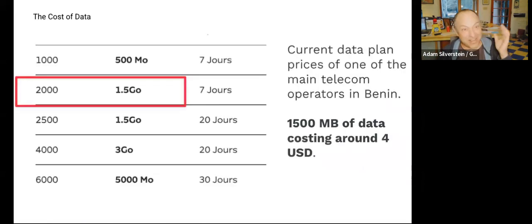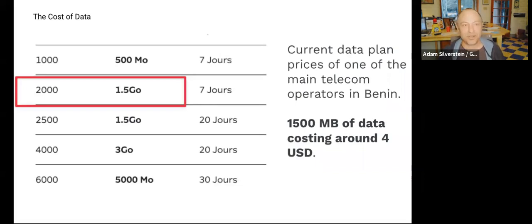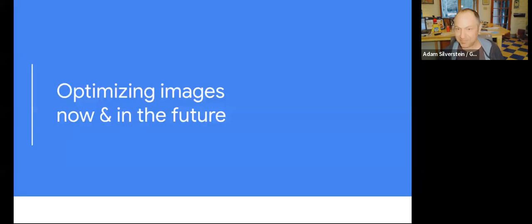Another thing to think about with images: they cost users to download. We're used to having unlimited bandwidth, but that's not the case in a lot of the world. Depending on where your users are, it might cost them per megabyte to download your images. There's an actual cost. And even if users aren't paying directly, there is an energy and environmental cost to storing and transmitting all this data. So there is a real cost to larger-than-needed imagery.